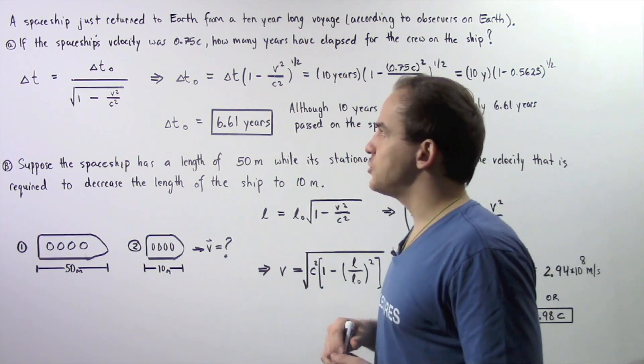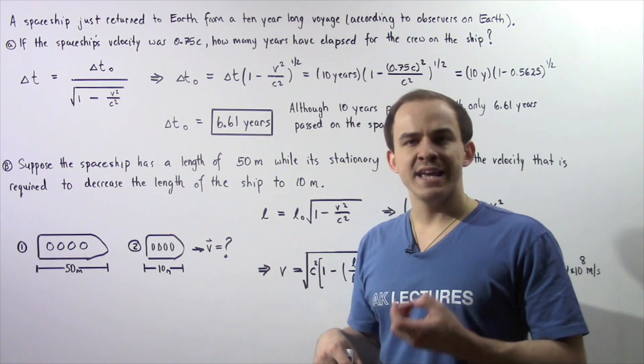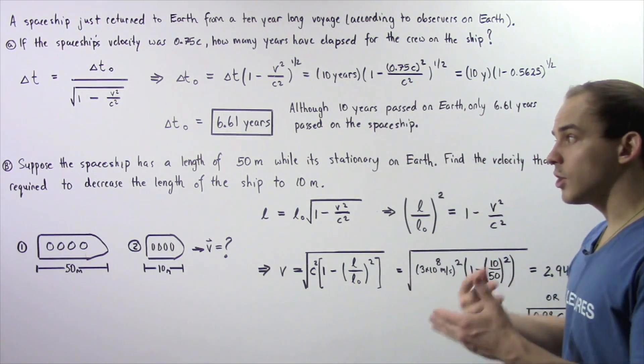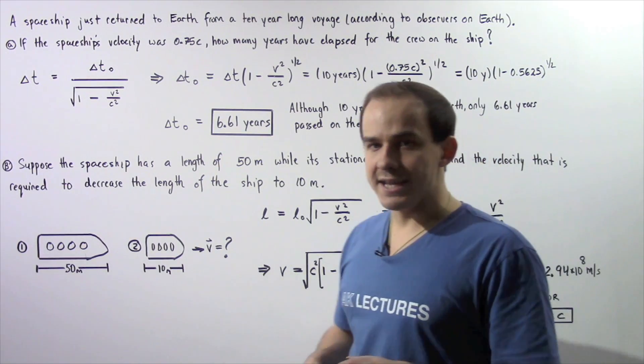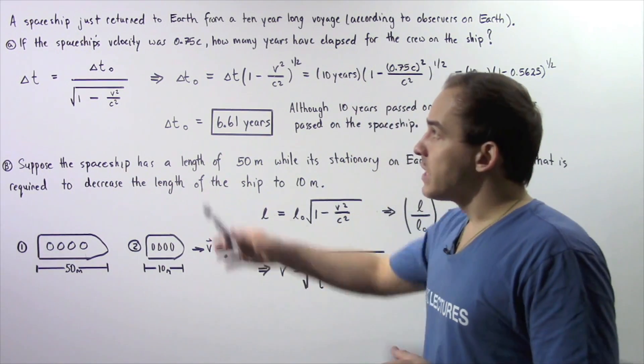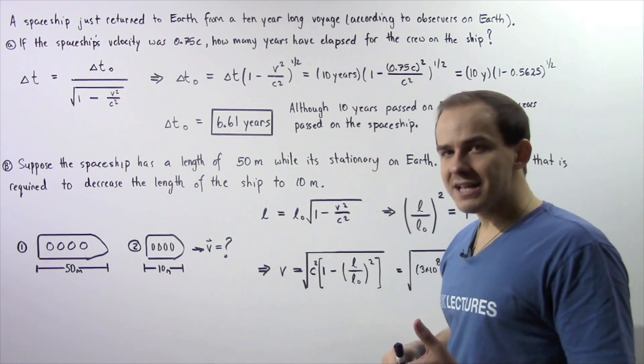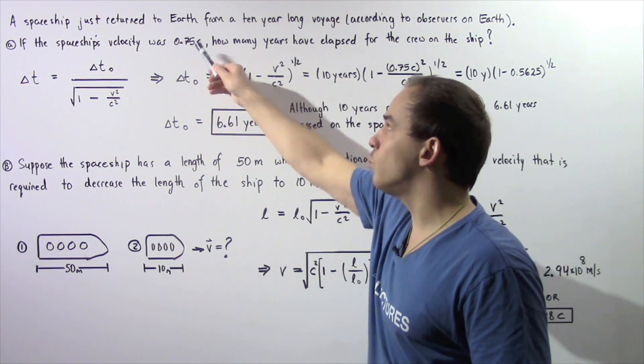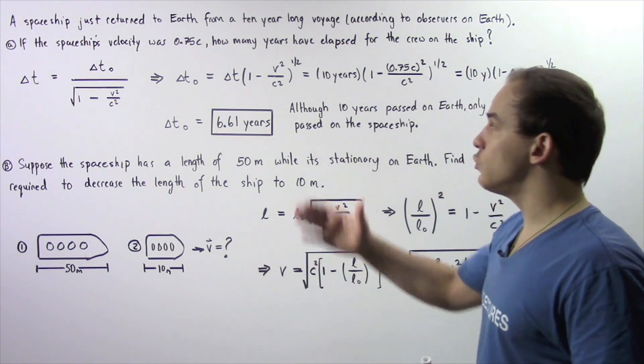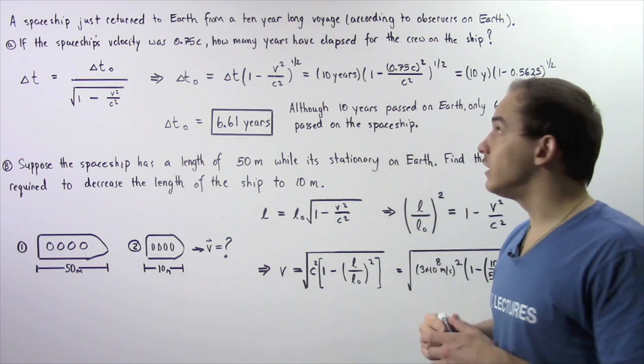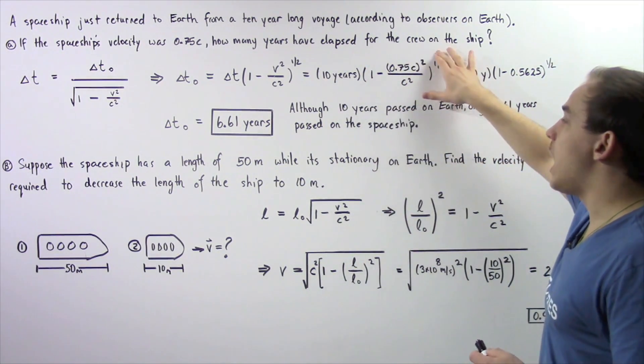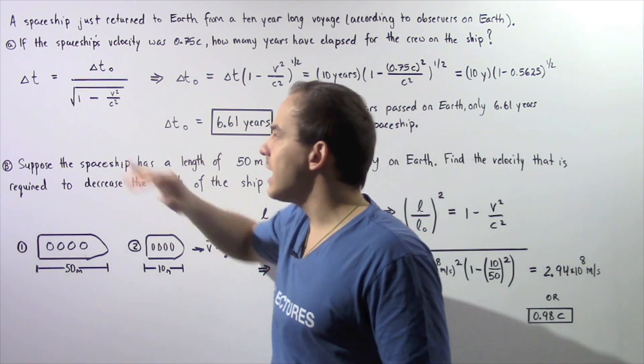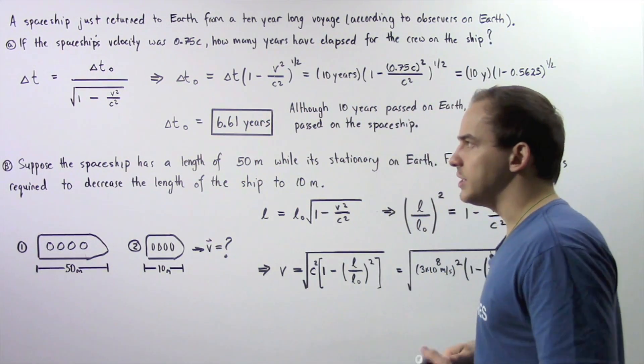Suppose a spaceship just returned to Earth from a 10-year long voyage, so 10 years have passed on Earth since the voyage began. Now in part A, if the spaceship's velocity was 0.75 multiplied by C, where C is the speed of light in a vacuum, how many years have elapsed for the crew on that spaceship? We want to apply the time dilation equation.